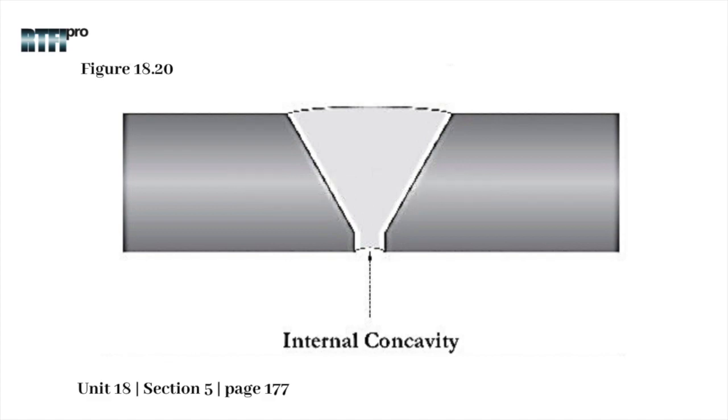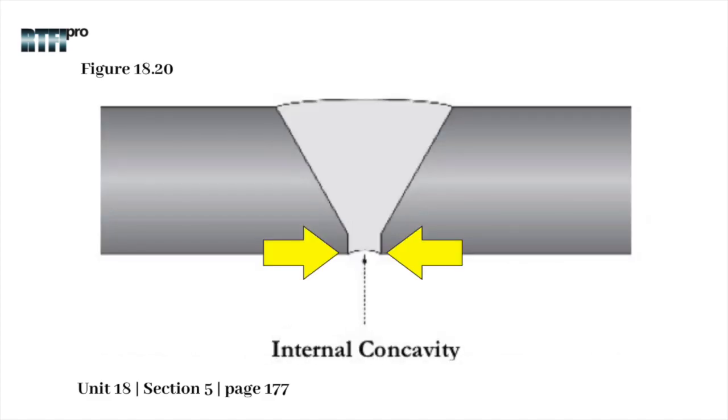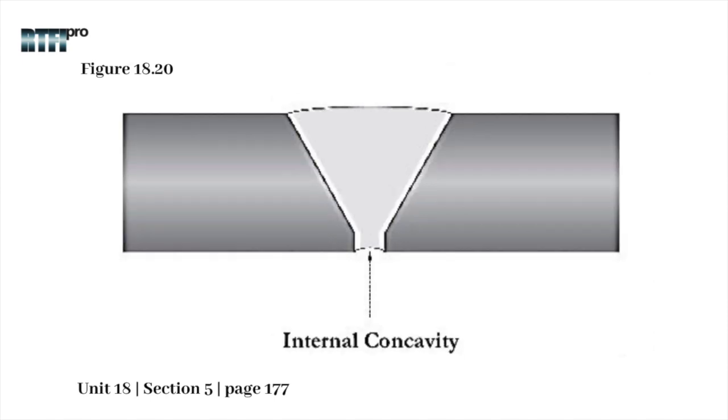Unlike incomplete penetration, the root bead is fused to both surfaces and the center of the root pass is slightly concaved within. With incomplete penetration, the root is not fused, but with internal concavity, the root is fused.